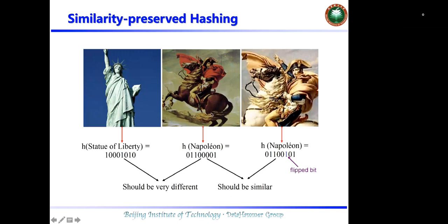The third and second images are semantically similar, so their corresponding hash codes are also semantically similar. After mapping these images into semantic similarity-preserved hash codes,